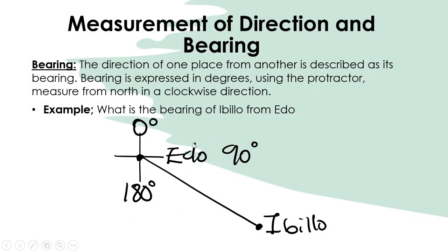An example: what is the bearing of Ibilo from Edu? On the compass cross, north is at the top, east to the right, south downward. The east reads 90 degrees and south reads 180 degrees. Measuring from Edu to Ibilo, the direction gives you 180 degrees. You use your protractor to get this reading.